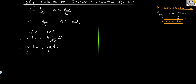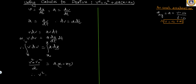If we integrate both sides — the left side from v-naught to v, and the right side from x-naught to x — the left side gives v²/2 evaluated from v-naught to v, which is (v² minus v-naught²)/2. The right side gives a times (x minus x-naught). Rearranging, we get v² equals v-naught² plus 2a(x minus x-naught).